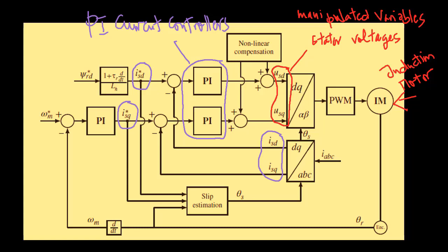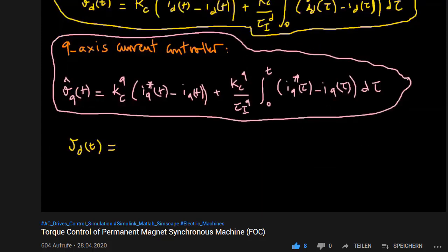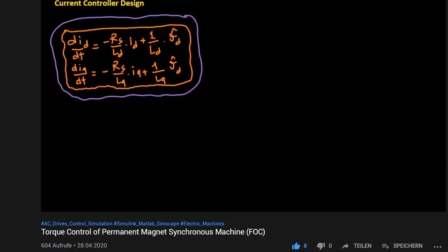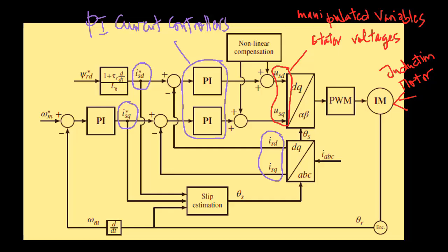Similar to PMSM control, there will be current controllers to regulate the isd and isq stator currents by manipulating the stator voltages usd and usq in the dq reference frame. The design strategy of the PI current controllers is not new to us because it simply follows the same current controller design procedures outlined in the last videos.